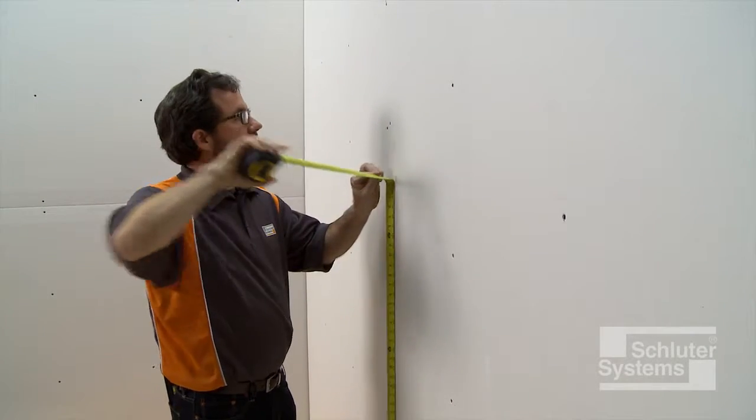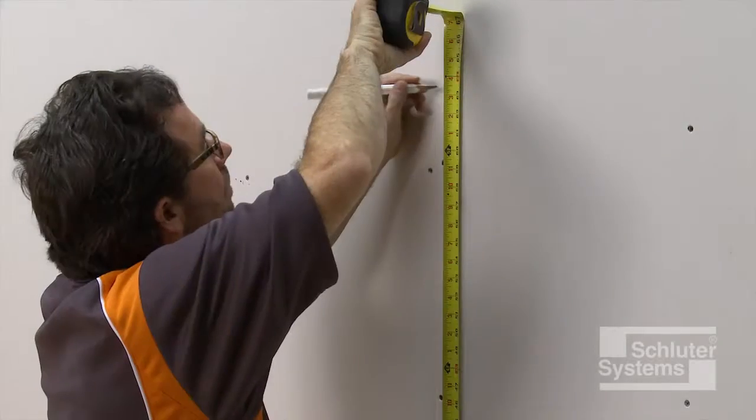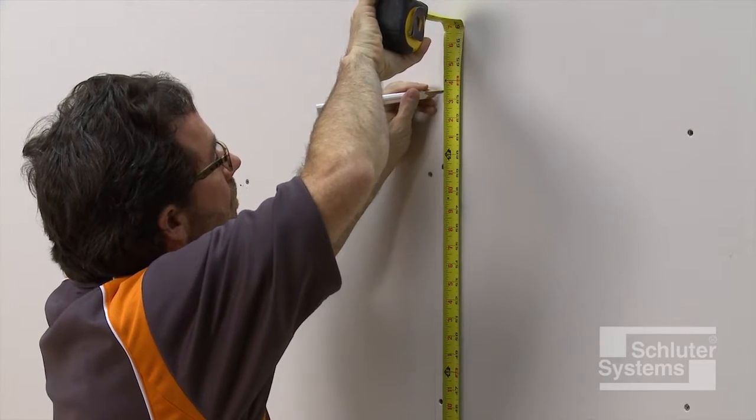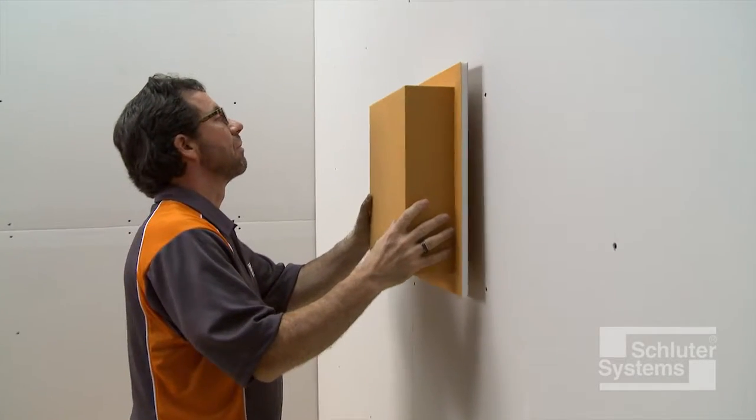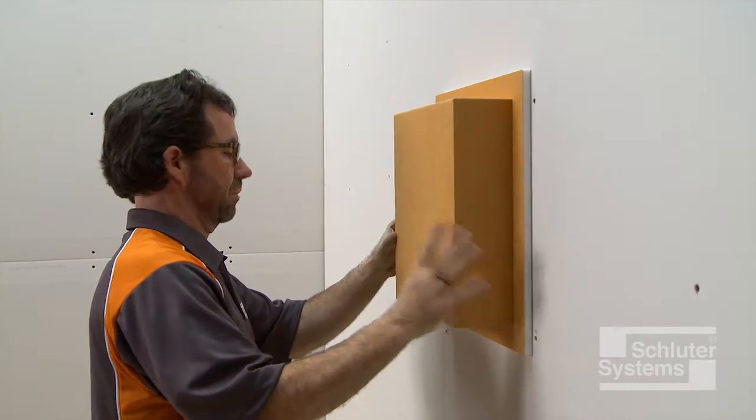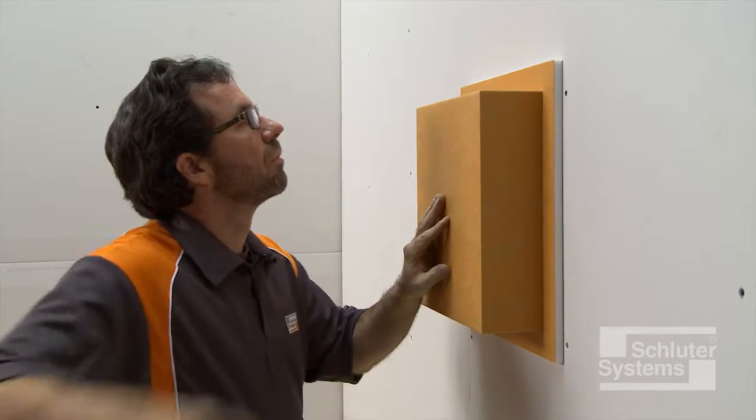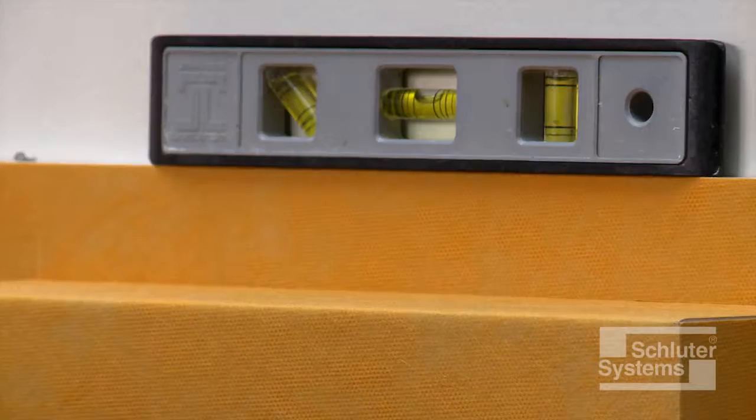Determine the desired location. Trace around the outside of the niche flange, making sure the lines are level and plumb.